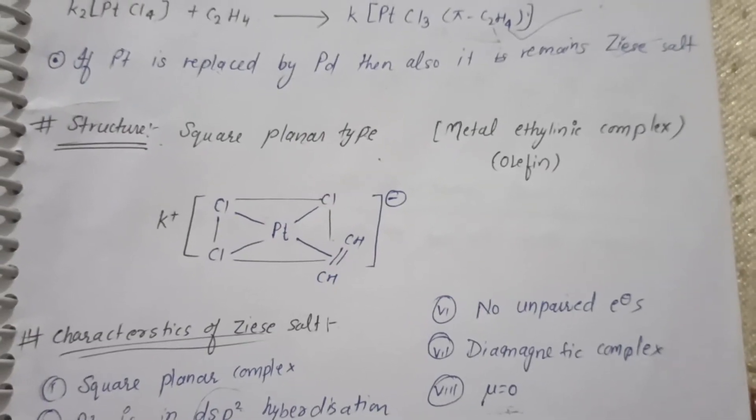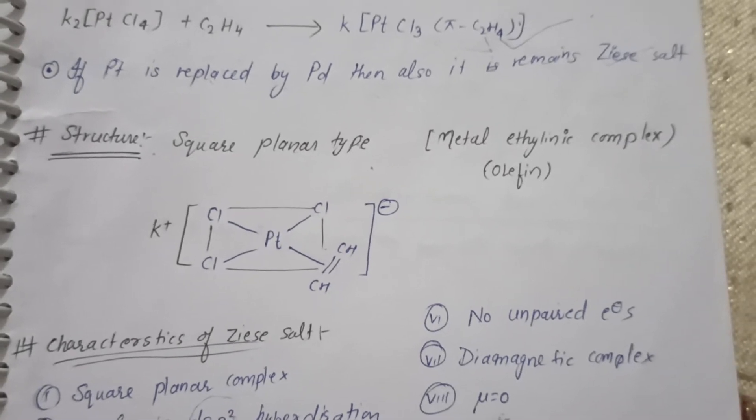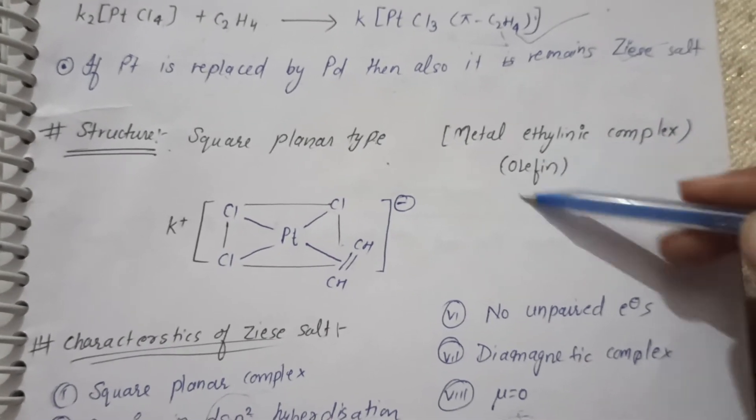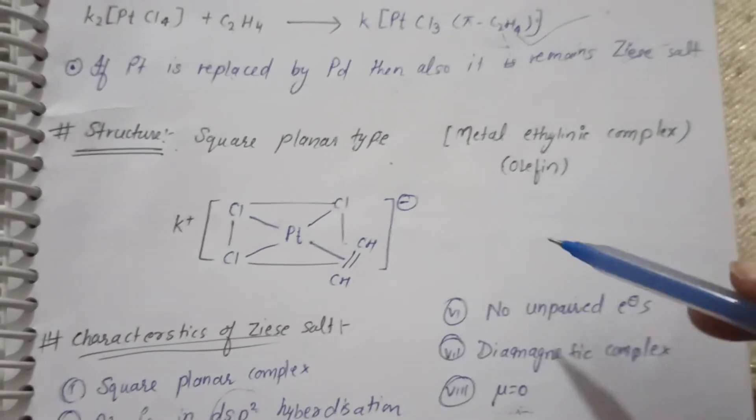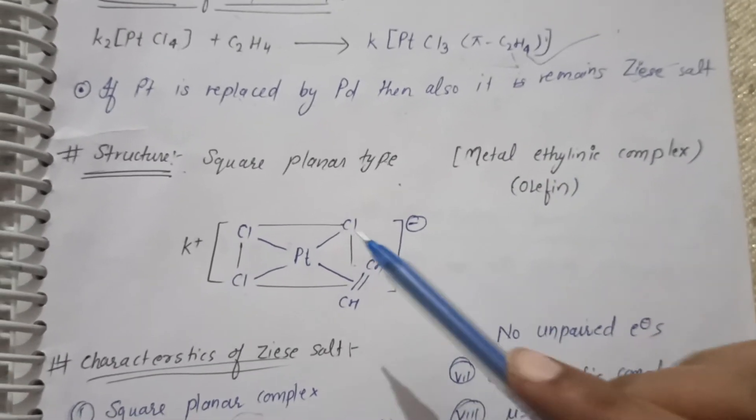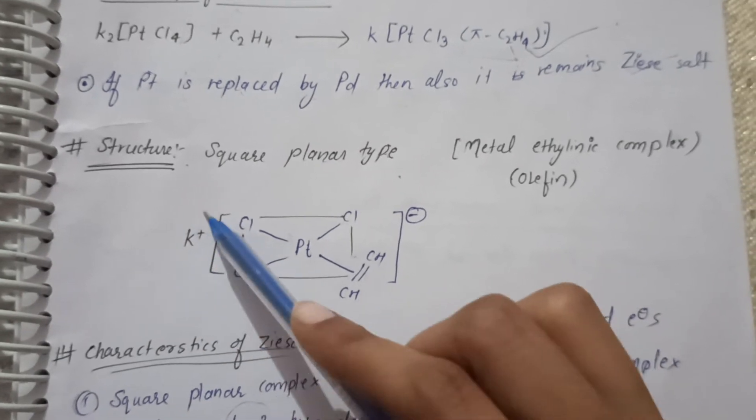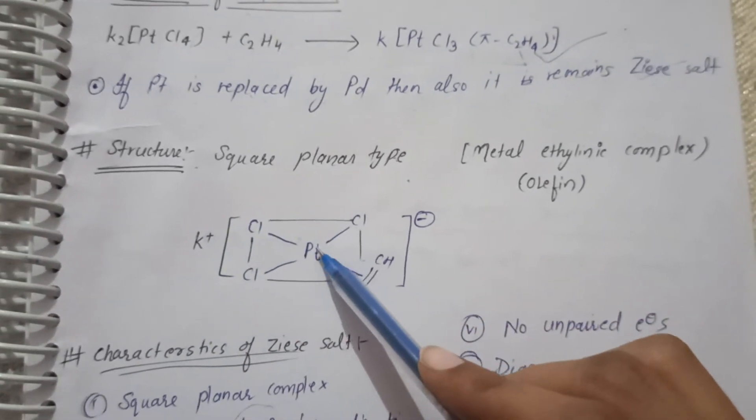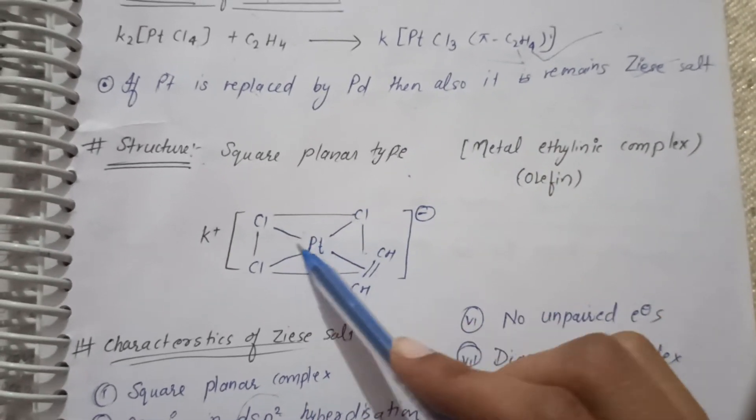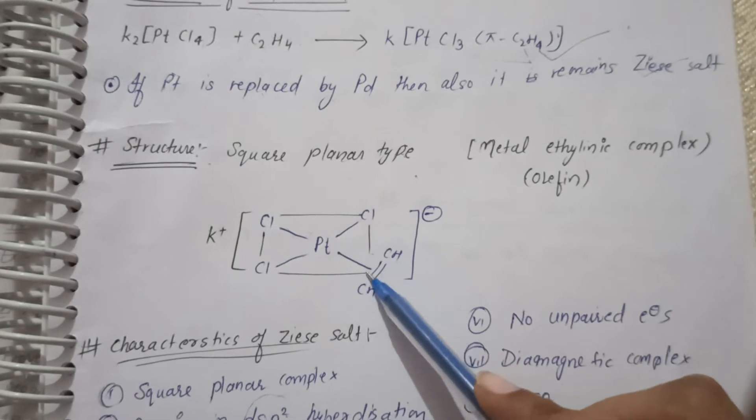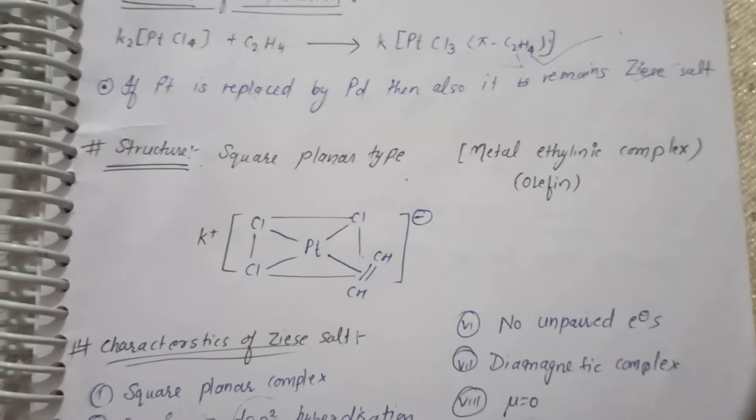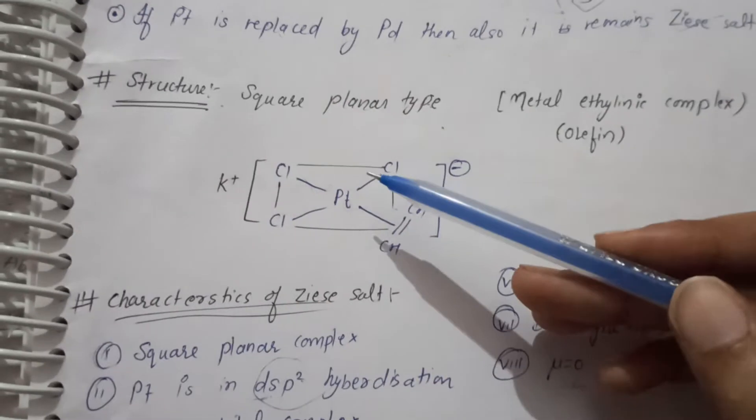The next step is the structure. The structure is the square planar structure. This is a metal ethylenic complex. This is why we also call it olefin complex because it is a metal ethylenic complex. Now, we have this structure. K-positive as it is. Then, Pt has Cl3, so 3 bonds with chlorine and 1 bond with ethylene. This is CH-CH.